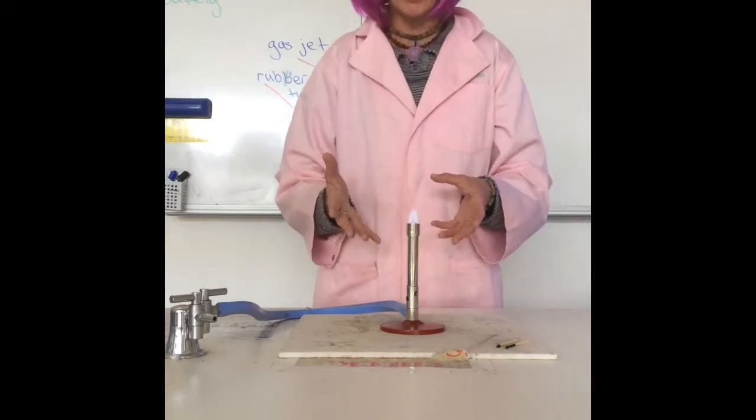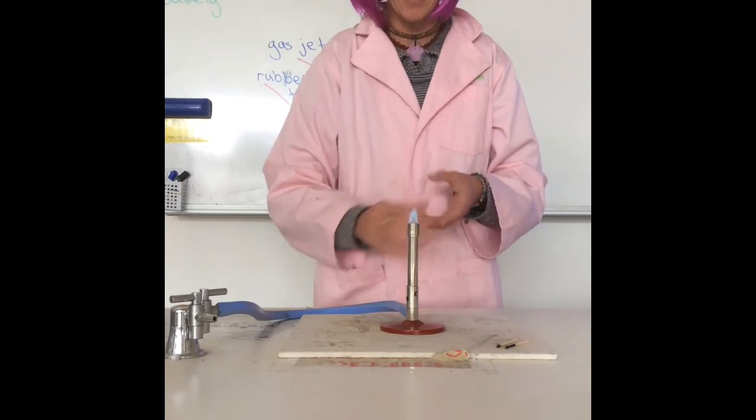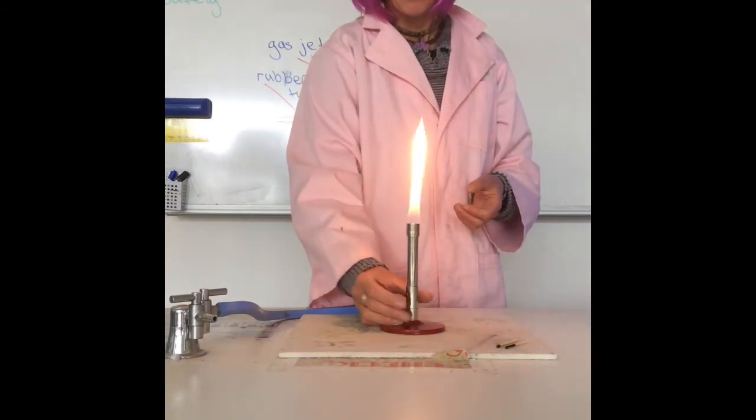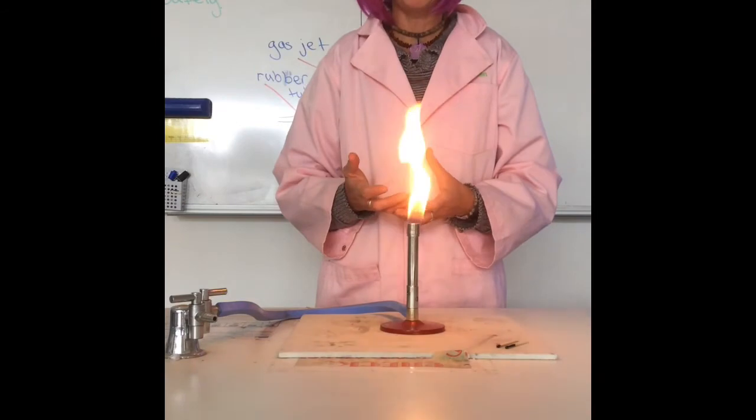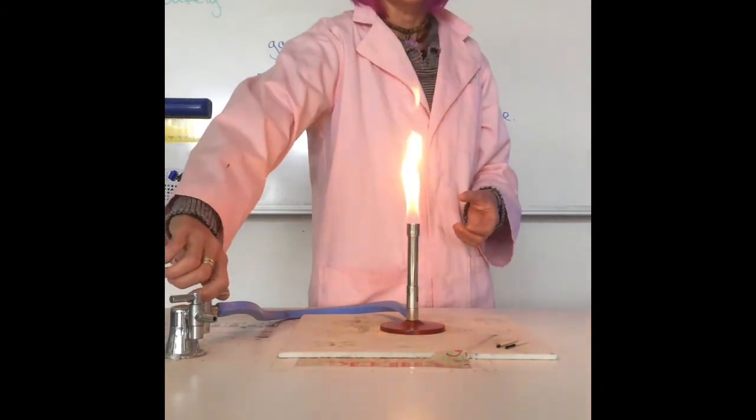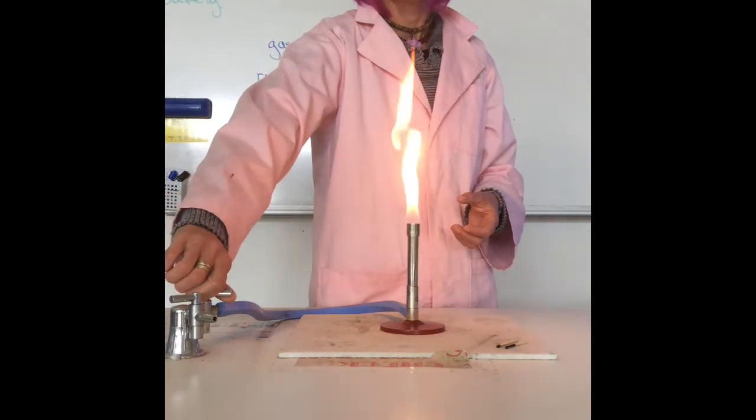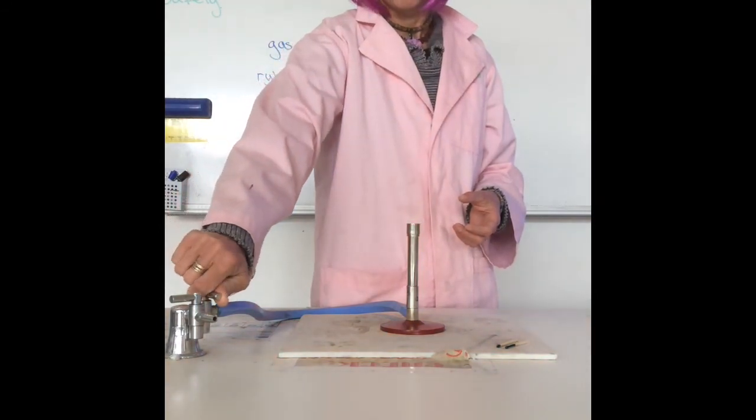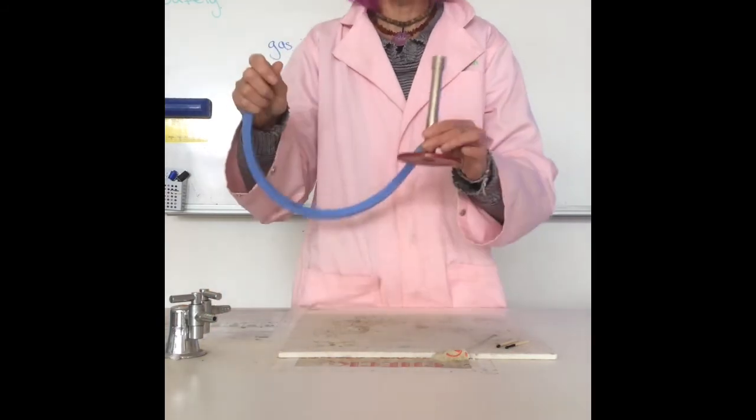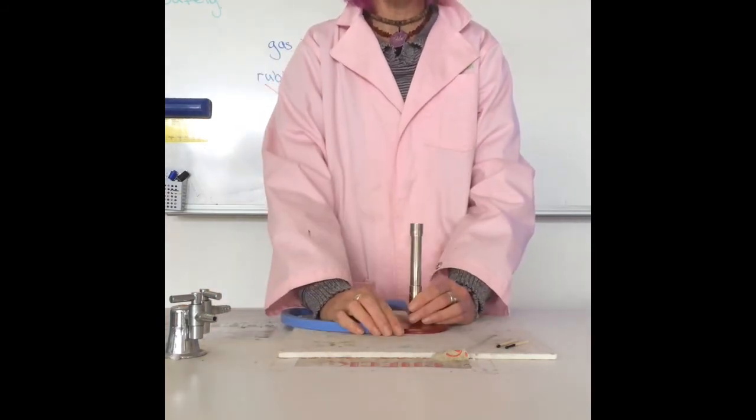Once you've finished heating your substance, it's time to put your Bunsen burner back on the safety flame. There we go. And we can now safely turn off the Bunsen burner. So I'm going to turn the gas tap off. And there we go.